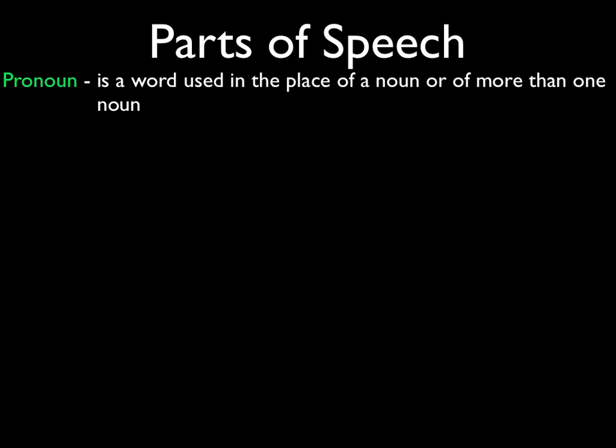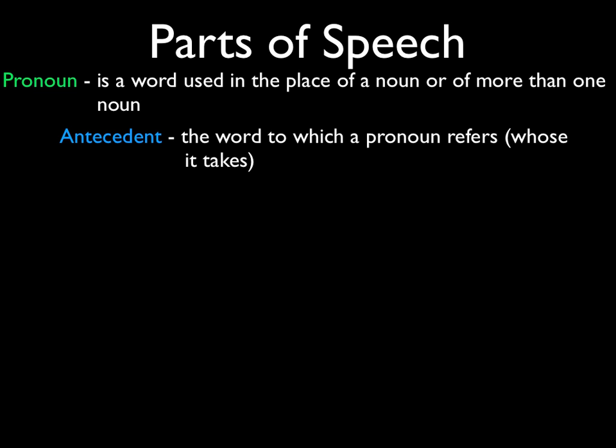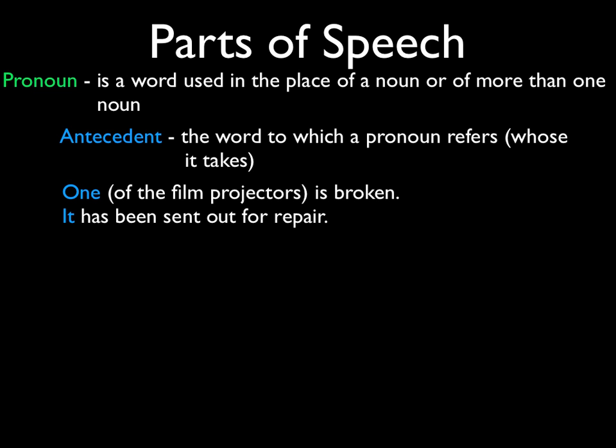Now we've talked about nouns. Let's talk a little bit about pronouns. We've all heard that a pronoun takes the place of a noun, or of more than one noun. Every pronoun needs an antecedent, which is the word to which a pronoun refers. For example: 'One of the film projectors is broken. It has been sent out for repair.' The antecedent to 'it' is the word 'one.' If you start using pronouns but you have used no antecedents, people sometimes have a hard time knowing what you're talking about. So try to use an antecedent — 'it' in this case replaces the word 'one.'